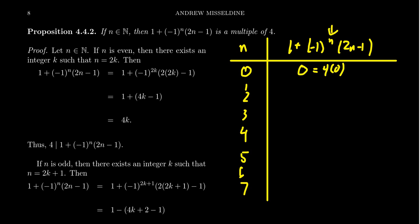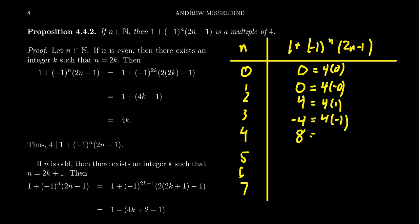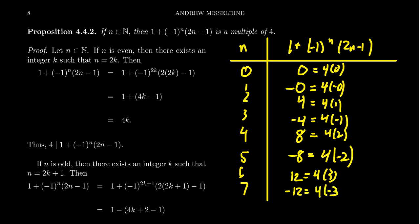When you plug in 2, you end up with 4, which is 4 times 1. When you plug in 3, you get negative 4, which equals 4 times (-1). Plugging in 4 gives 8, which is 4 times 2. Plugging in 5 gives negative 8, which is 4 times (-2). Plugging in 6 gives 12, which is 4 times 3. And plugging in 7 gives negative 12, which is 4 times (-3).